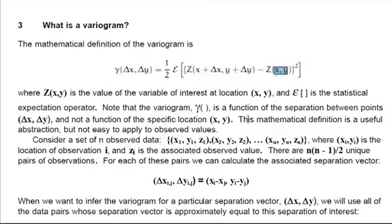This mathematical function is a useful abstraction, but it's not easy to apply to observed values. Consider a set of n observed data: x1, y1, z1, x2, y2, z2, through xn, yn, zn. So in our case we have, I think, 15,000 of these we would have. Where x sub i, y sub i is the location of observation i, and z sub i is the associated observed value, in our case the height. Then there are n times n minus 1 over 2 unique pairs of observations.